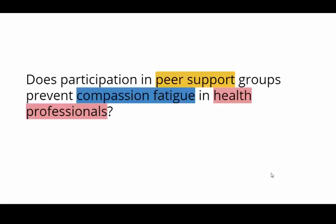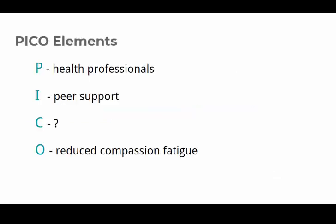Now let's identify our PICO elements — you can see them highlighted here. Our population is health professionals, our intervention is peer support, and our outcome is reduced compassion fatigue. But we don't have a comparison — don't panic, this is fine, because we really do have a comparison. We'll be comparing people who participate in peer support to people who receive no intervention at all. In fact, even when you do have a comparison, it isn't unusual to leave the comparison out of the keyword search, because sometimes it can be just too limiting and we need to prioritize other elements.